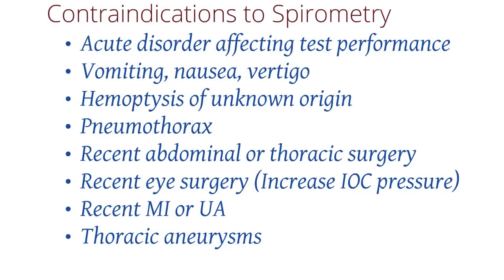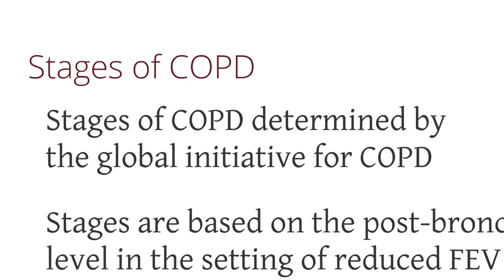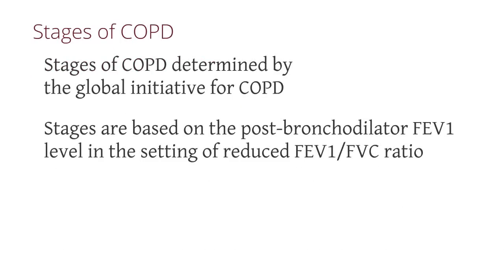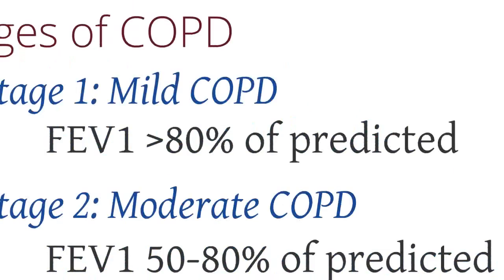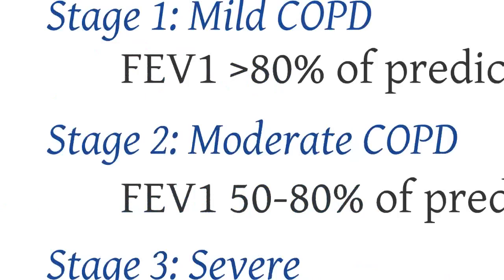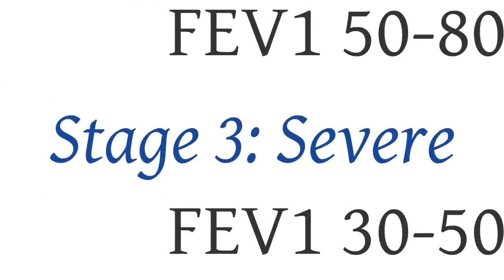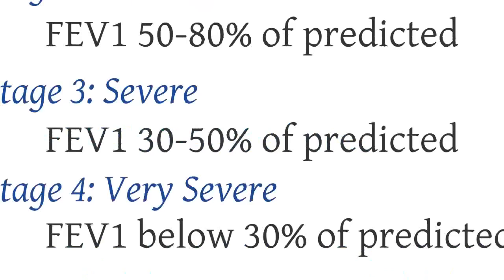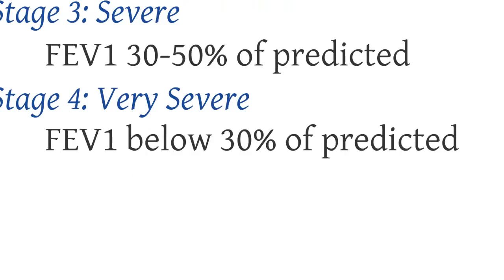Now let's talk about the stages of COPD. The stages are important because they will help dictate treatment. They were determined by the Global Initiative for COPD, and are based on post-bronchodilator FEV1 levels in the setting of a reduced FEV1 over FVC ratio on spirometry. Stage 1 is mild COPD, characterized by an FEV1 greater than 80% of predicted. Stage 2 is moderate COPD, with FEV1 from 50% to 80%. Stage 3 is severe COPD, with FEV1 from 30% to 50%. Stage 4 is very severe COPD, with FEV1 below 30% of predicted.